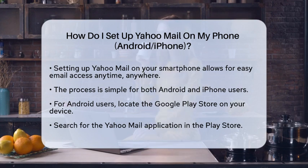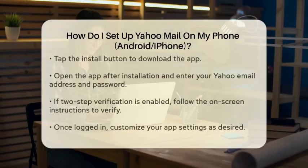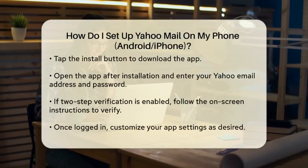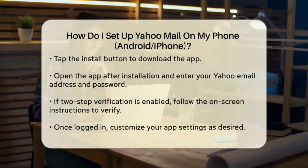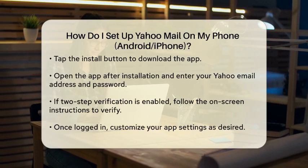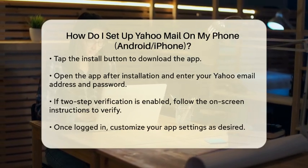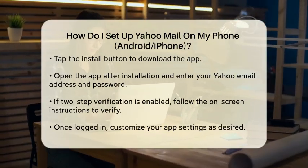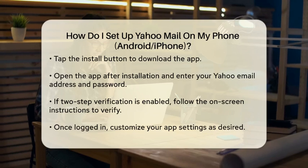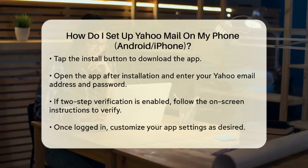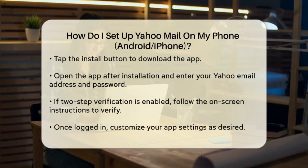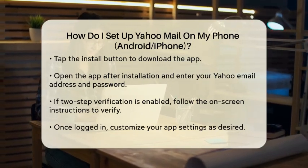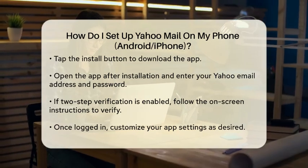For Android users, start by locating the Google Play Store on your device. Once there, search for the Yahoo Mail application. After finding it, tap on the Install button to download the app. Once the installation is complete, open the application. You will be prompted to enter your Yahoo email address and password. After entering your credentials, tap on the Sign In button. If you have two-step verification enabled, follow the on-screen instructions to complete the process. Once logged in, you can customize your settings according to your preferences.